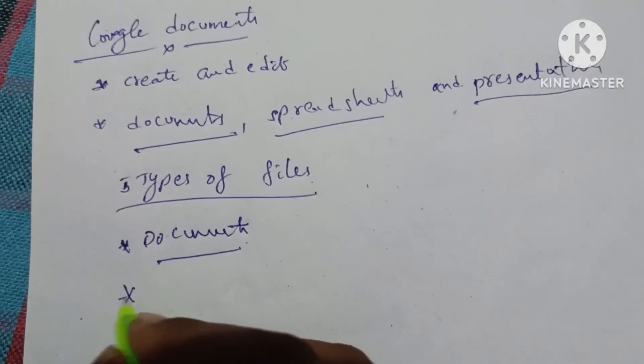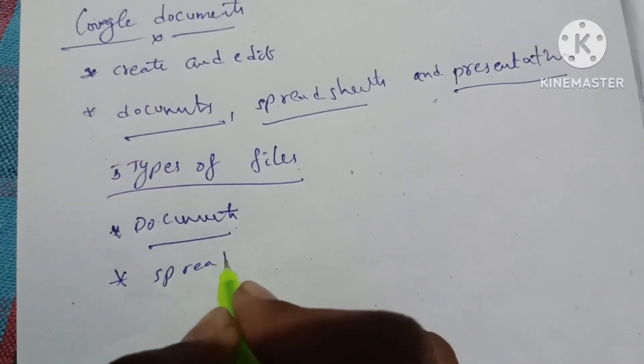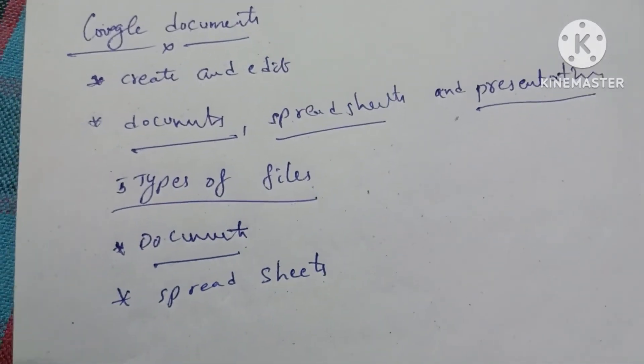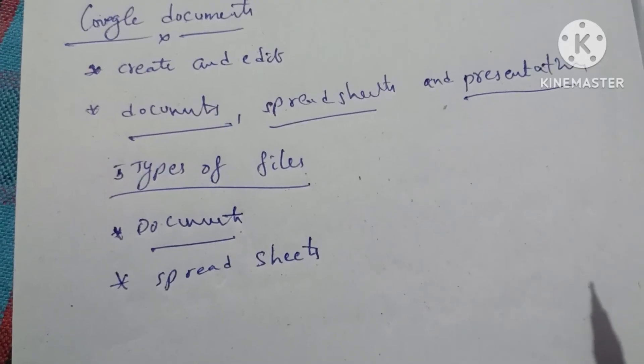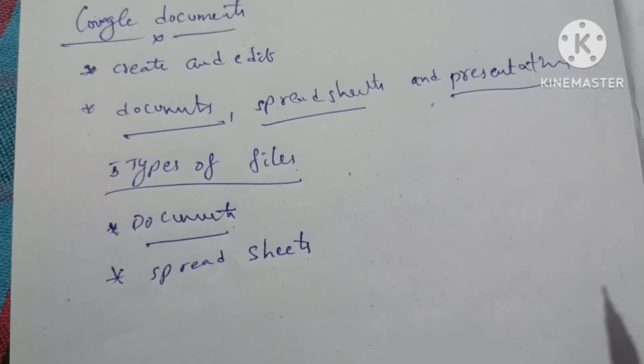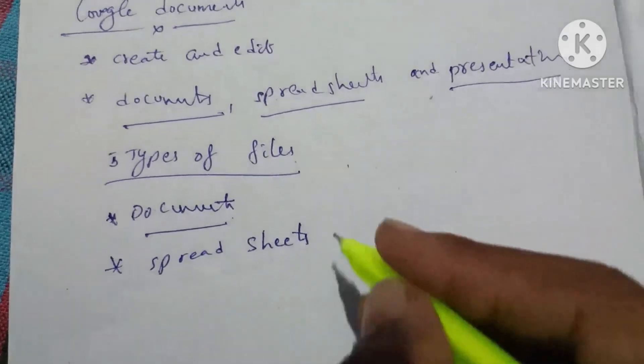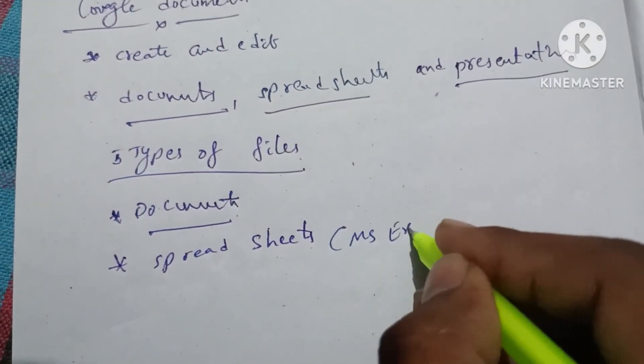The second type is spreadsheets. Spreadsheets are for organizing information in rows and columns. This is similar to Microsoft Excel or MS Excel.